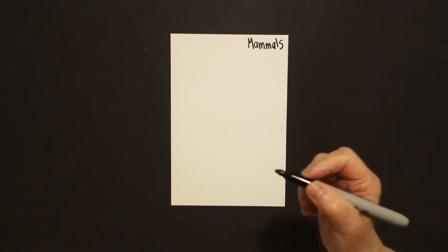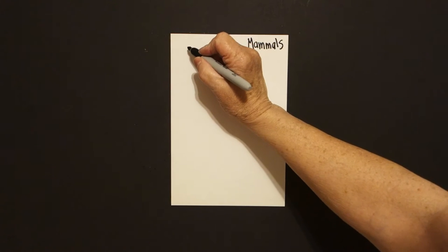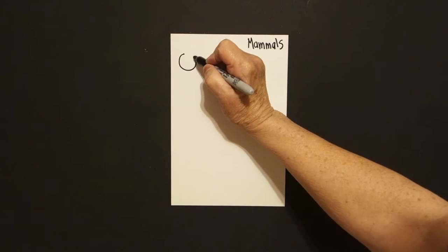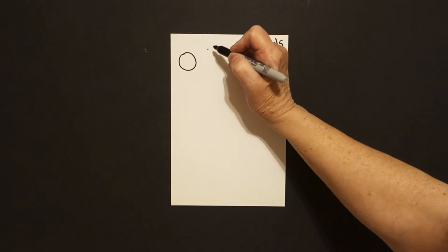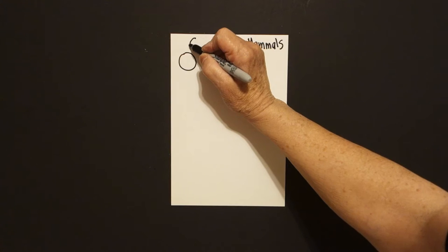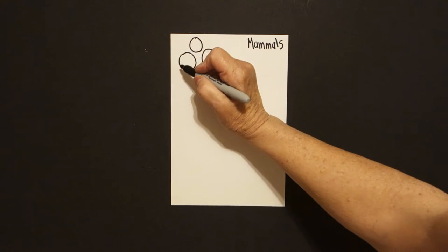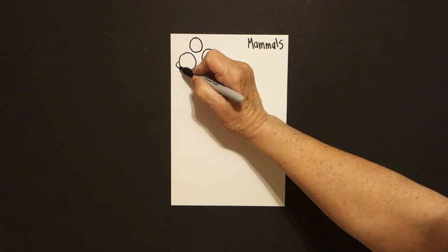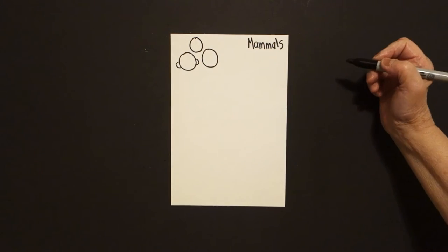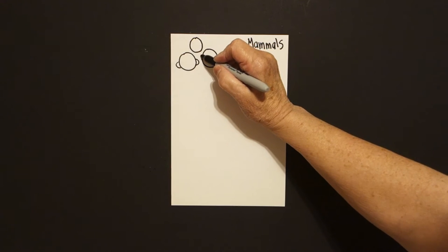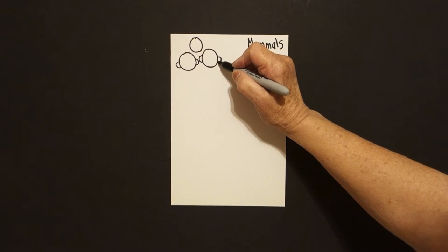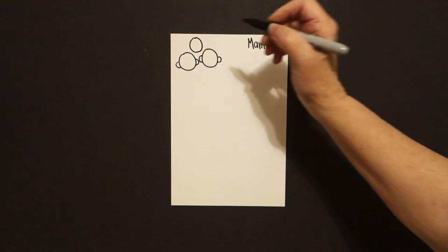So I come over here on the left side, put a dot. We're going to draw one, put a dot, two, put a dot — three circles. Curve line out in on the left, curve line out in on the right, curve line out in on the left, curve line out in on the right.